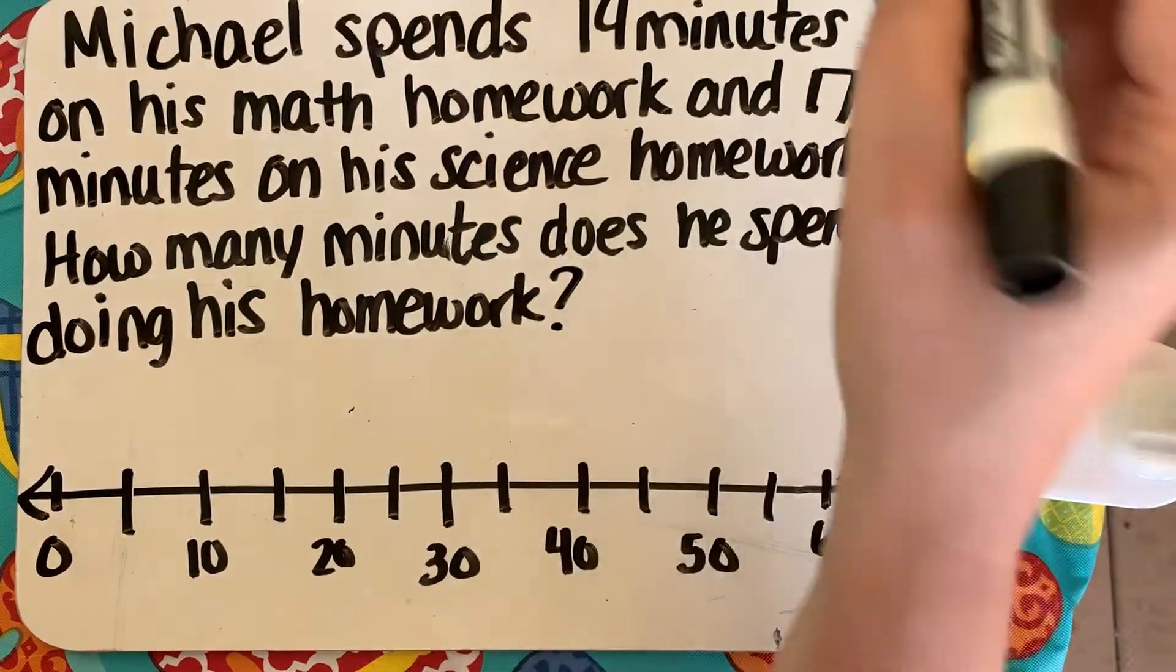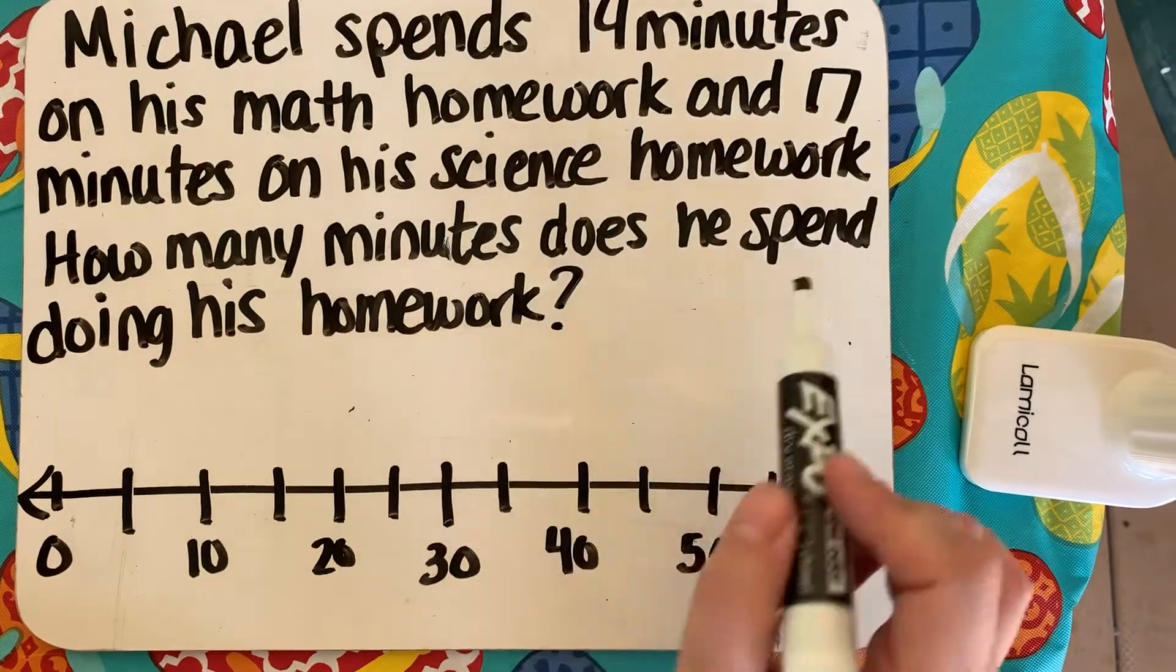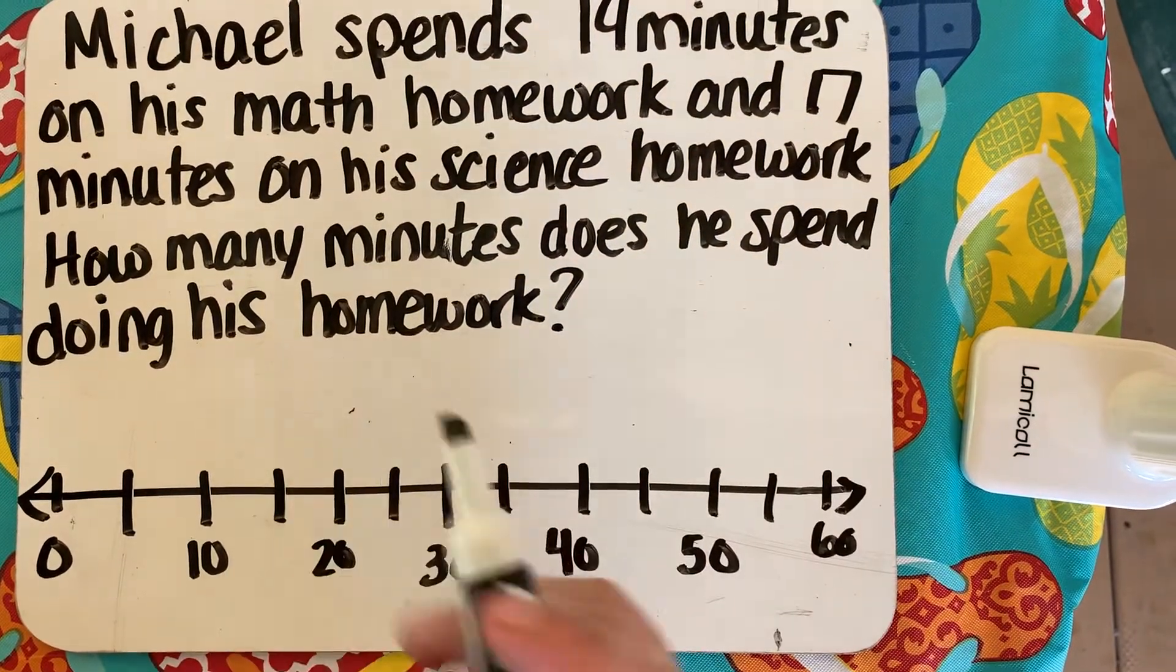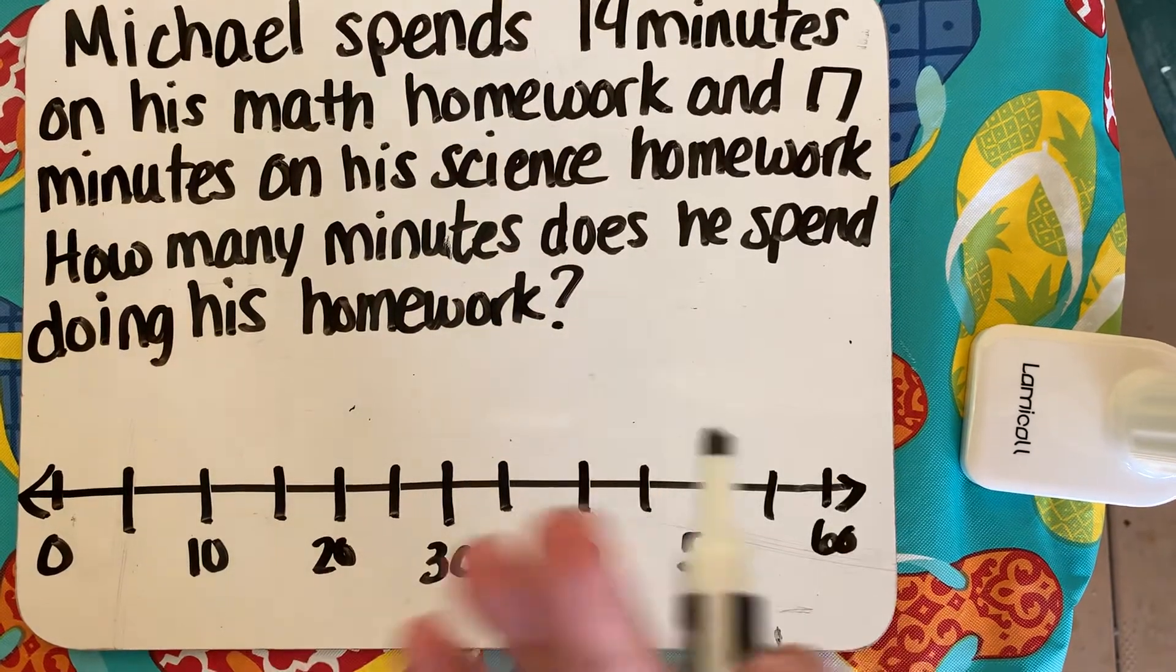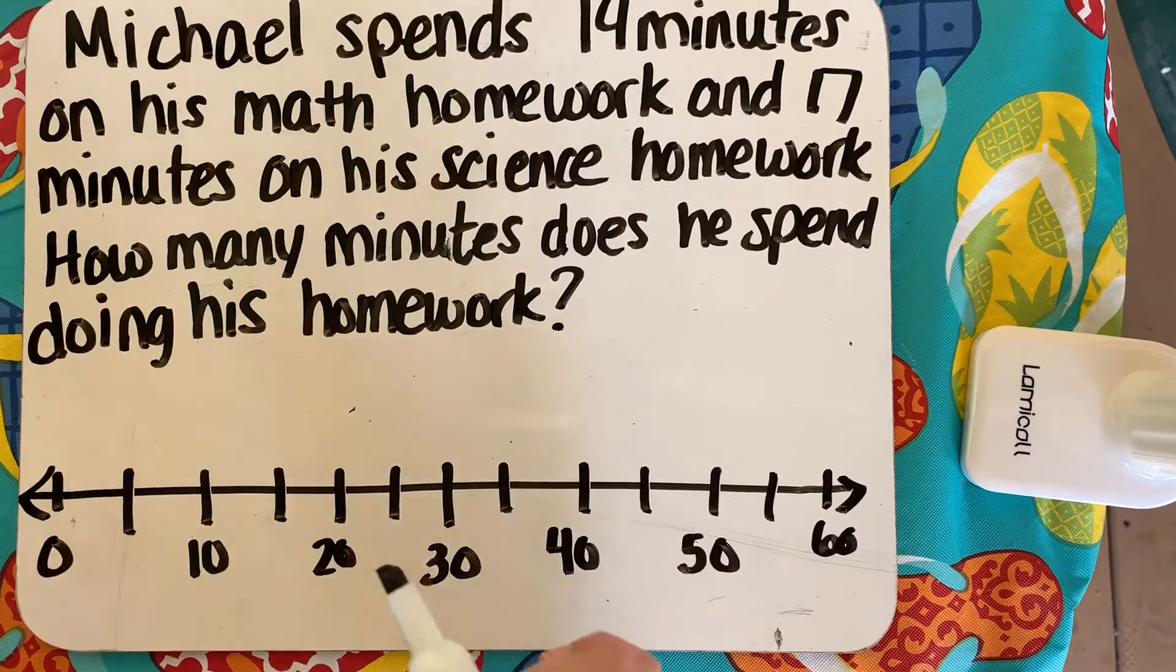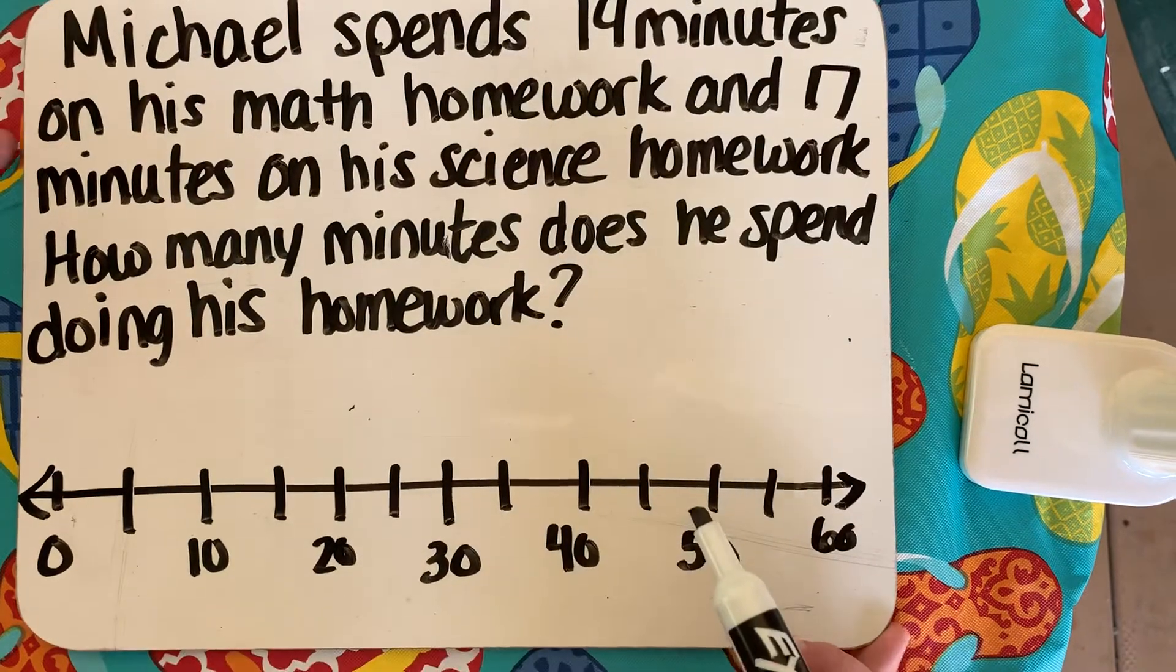This is a question. So we're finding out how much time does he spend doing his homework. We want to know the total amount of how much time he's doing. So we have two time frames we can either add those up but it says it wants, it has a timeline.